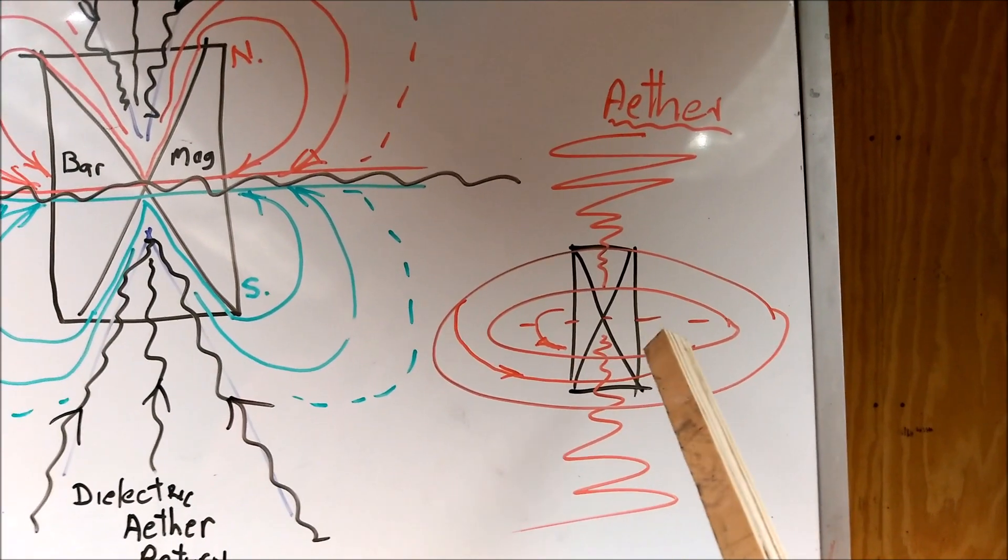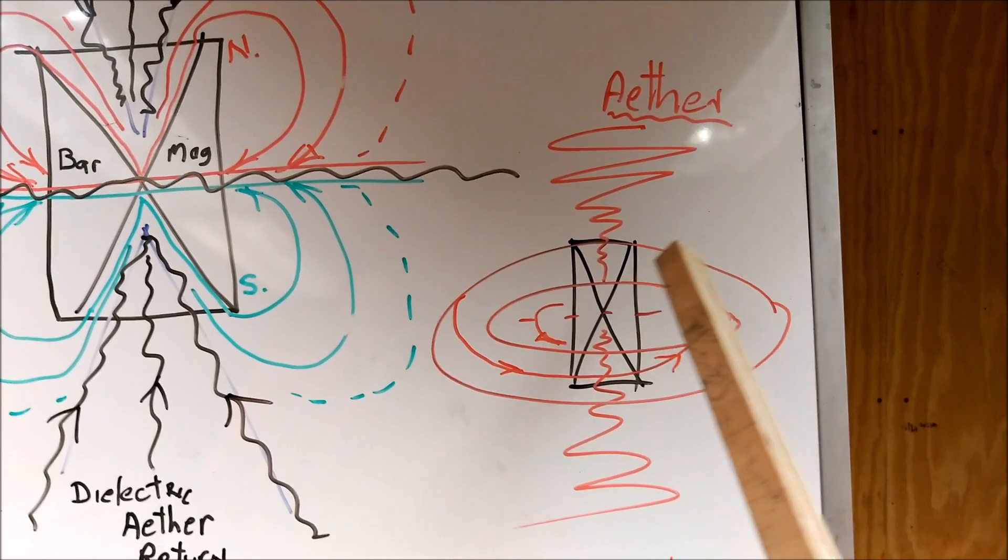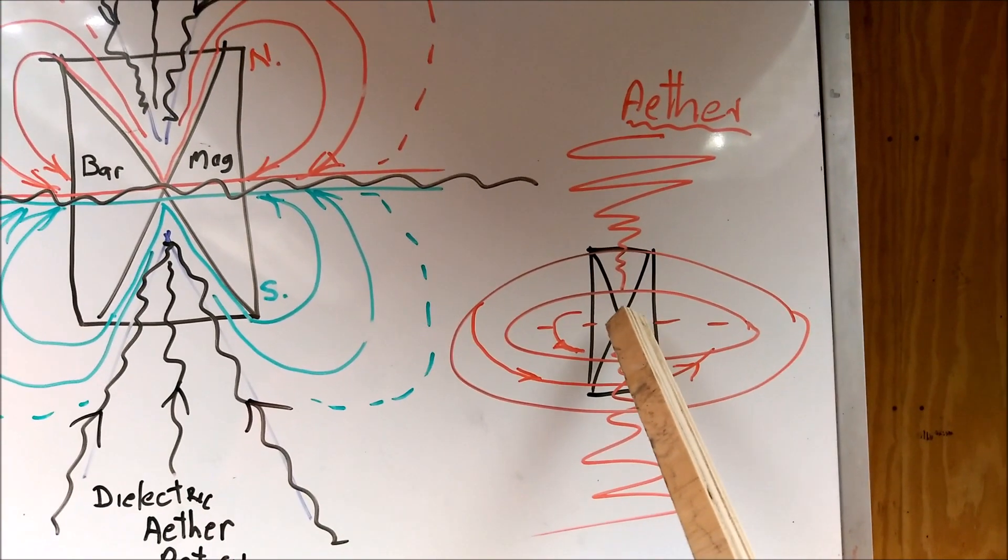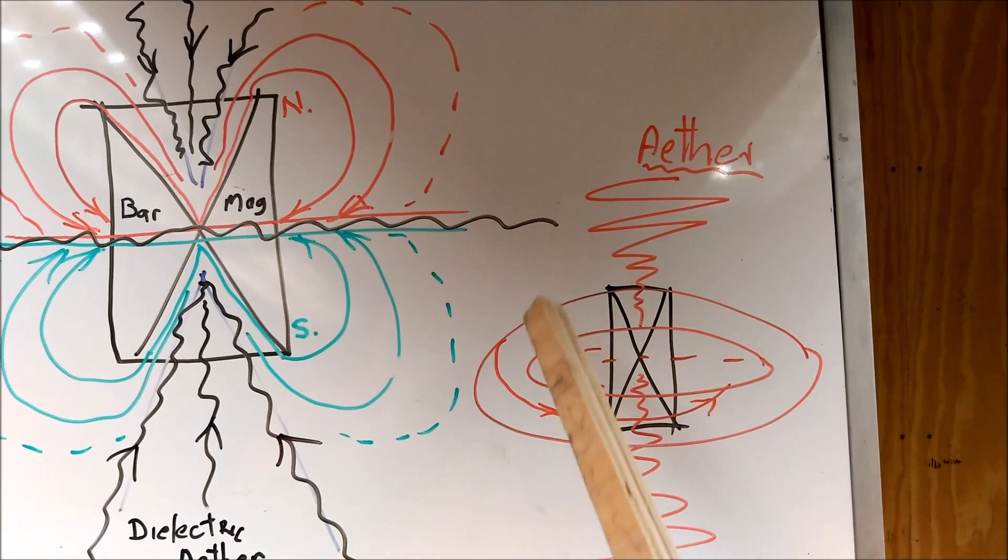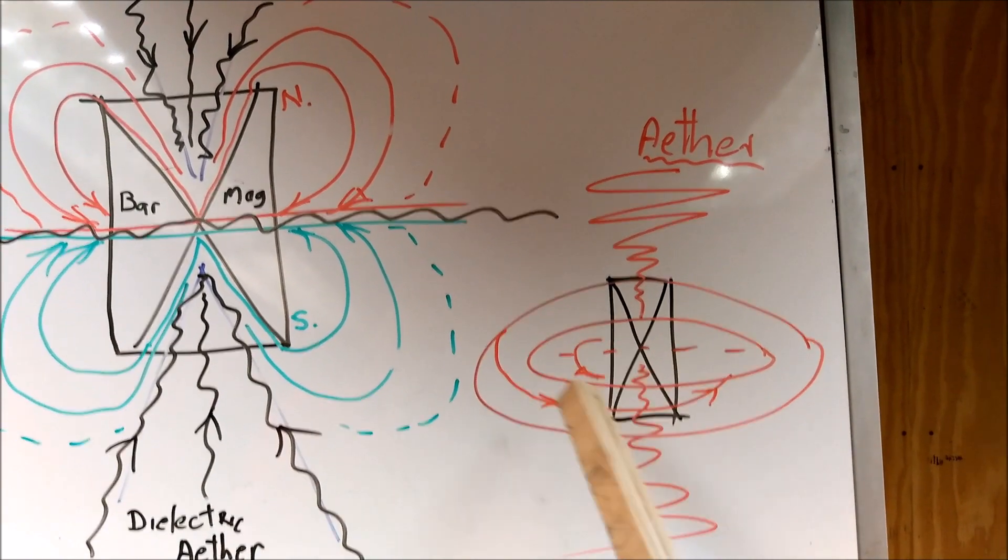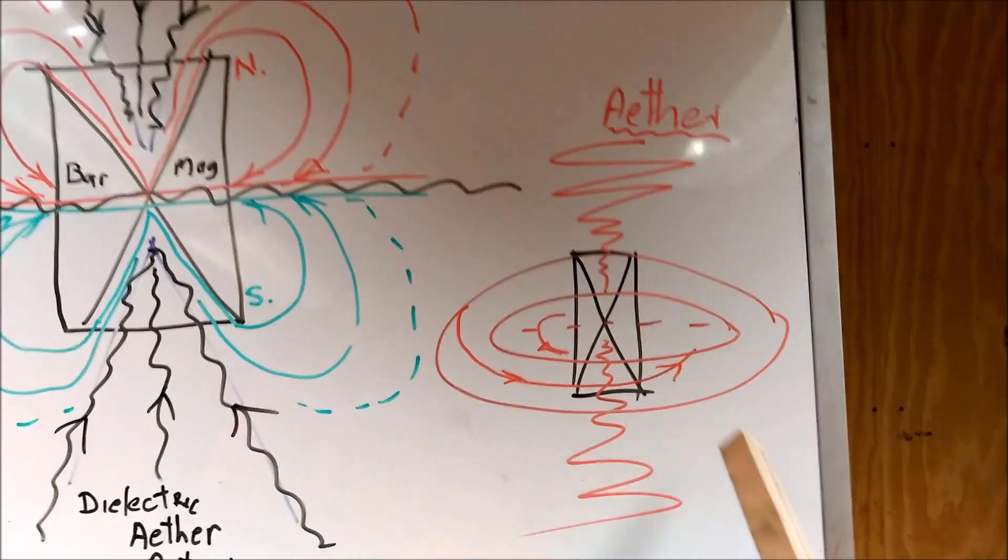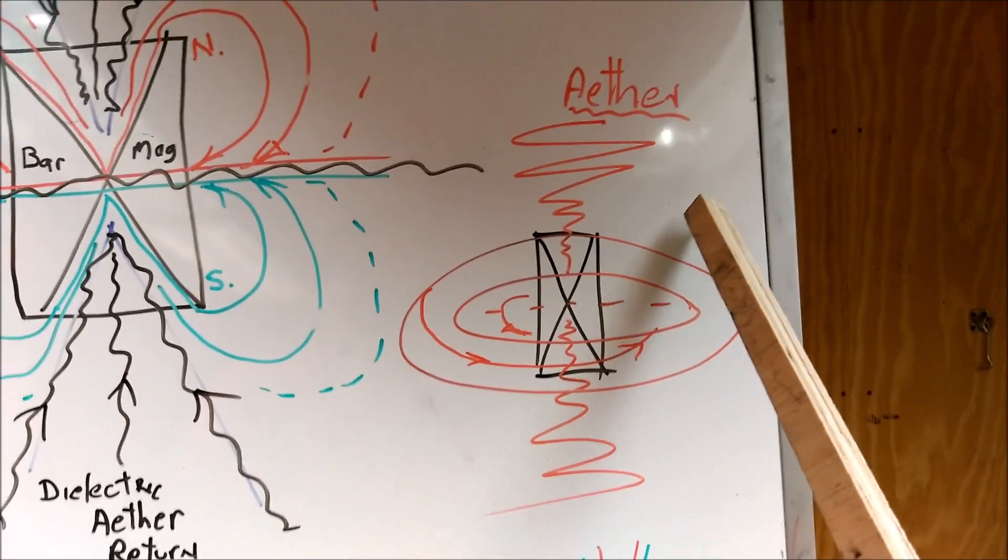Then I think the ether circulates round and comes—it either flies out from the middle like a spiral or it flies in. It may be both. I'm not sure on that, more study is needed there.